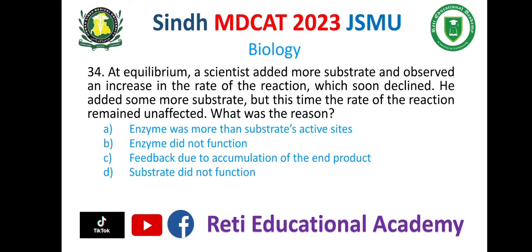Question number 34. At equilibrium, a scientist added more substrate and observed an increase in the rate of reaction which soon declined. He added some more substrate but this time the rate of reaction remained unaffected. What was the reason?